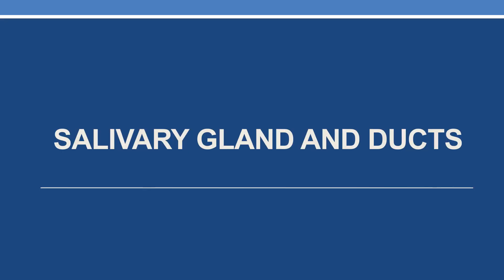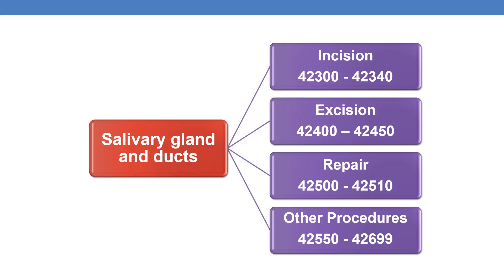Coming to the next topic in the digestive system: salivary glands and ducts. The CPTs are divided into incision (42300 to 42340), excision (42400 to 42450), repair (42500 to 42510), and other procedures (42550 to 42699).